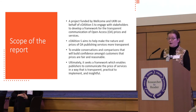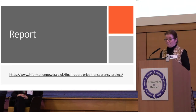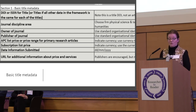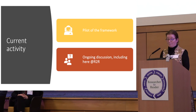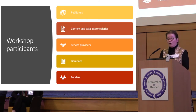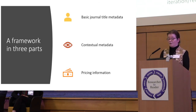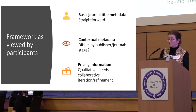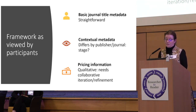The framework report is available and comes in three parts. The framework is currently being piloted. Our workshop included publishers, content and data intermediaries, service providers, librarians, and funders. The conclusion was that basic journal title and metadata was relatively straightforward, that contextual metadata differs by publisher and journal with a recommendation to stage implementation, and that pricing information is qualitative and needs collaborative iteration and refinement.